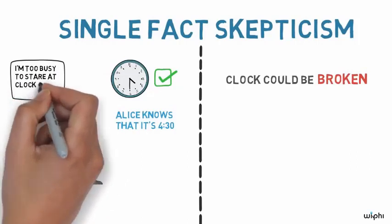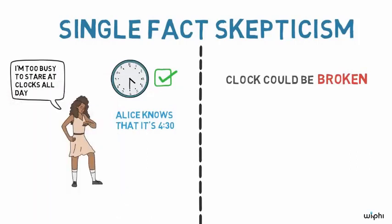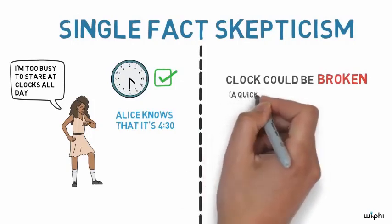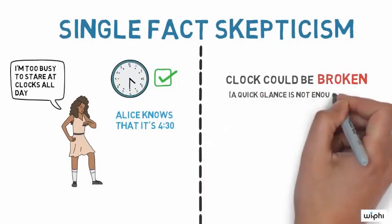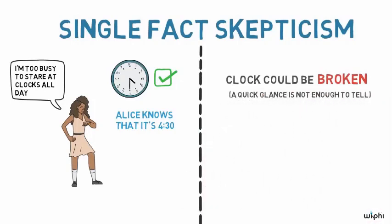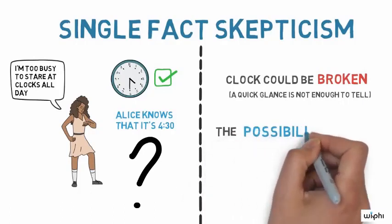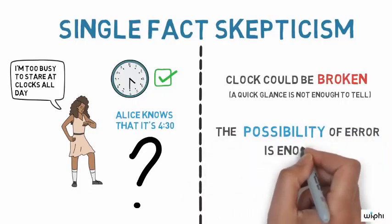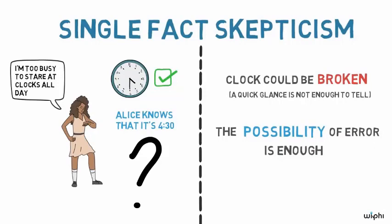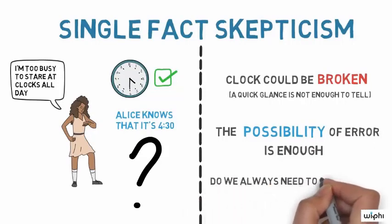Then it gets harder to see Alice as really knowing the time. If her quick glance isn't enough to tell the difference between a working clock and a broken one, then how does Alice really know what time it is? Just thinking about the possibility of error can make it seem like knowledge is really hard to attain. Do we always have to double check that the clock is working in order to know the time?